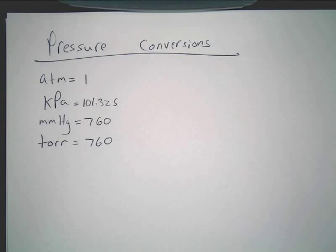Now, you must know these four conversions, and you must be able to use them. Torr and millimeters of mercury are the same ones, so that makes it easy.